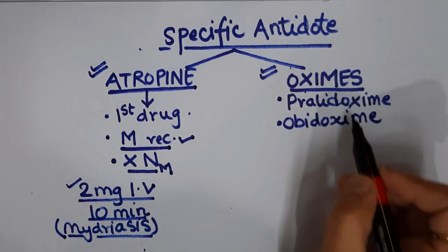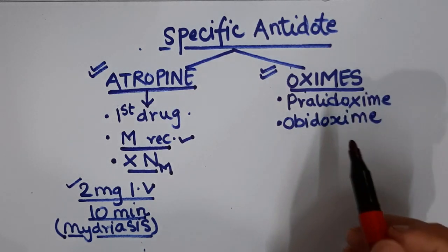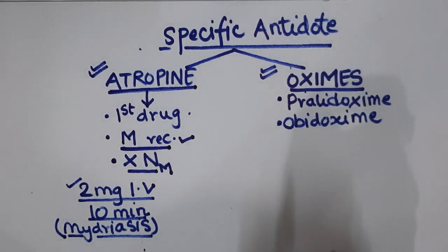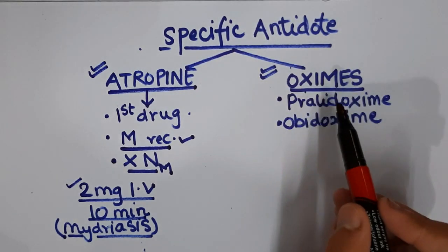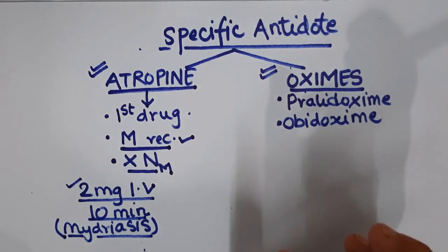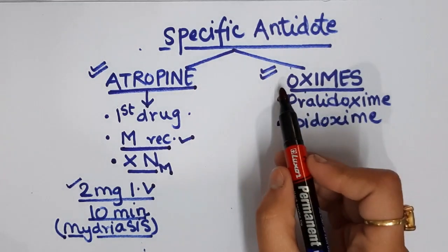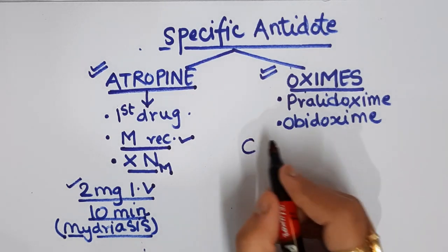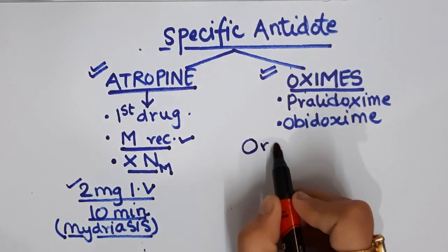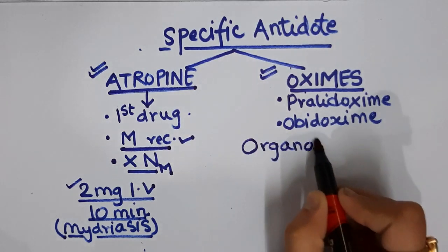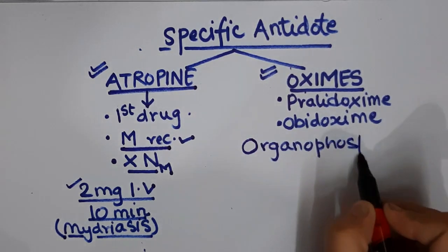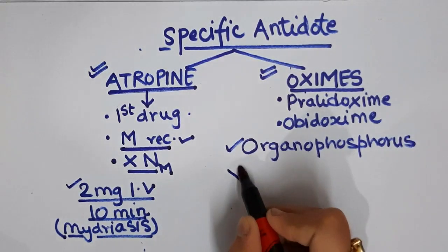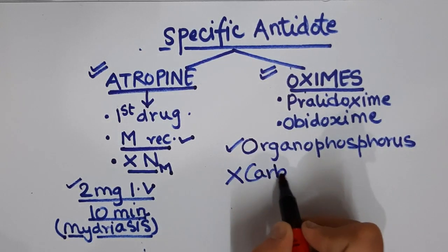Oximes are used to reverse neuromuscular paralysis. An important distinction: oximes can only be used in organophosphorus poisoning — they cannot be used in carbamate poisoning.